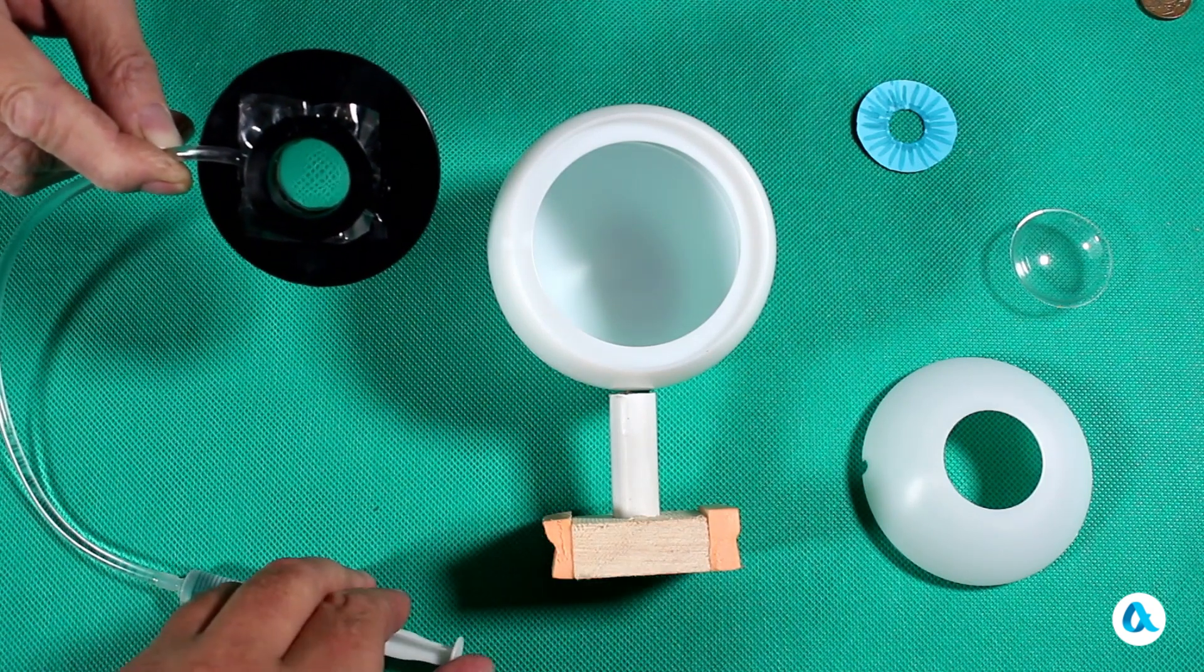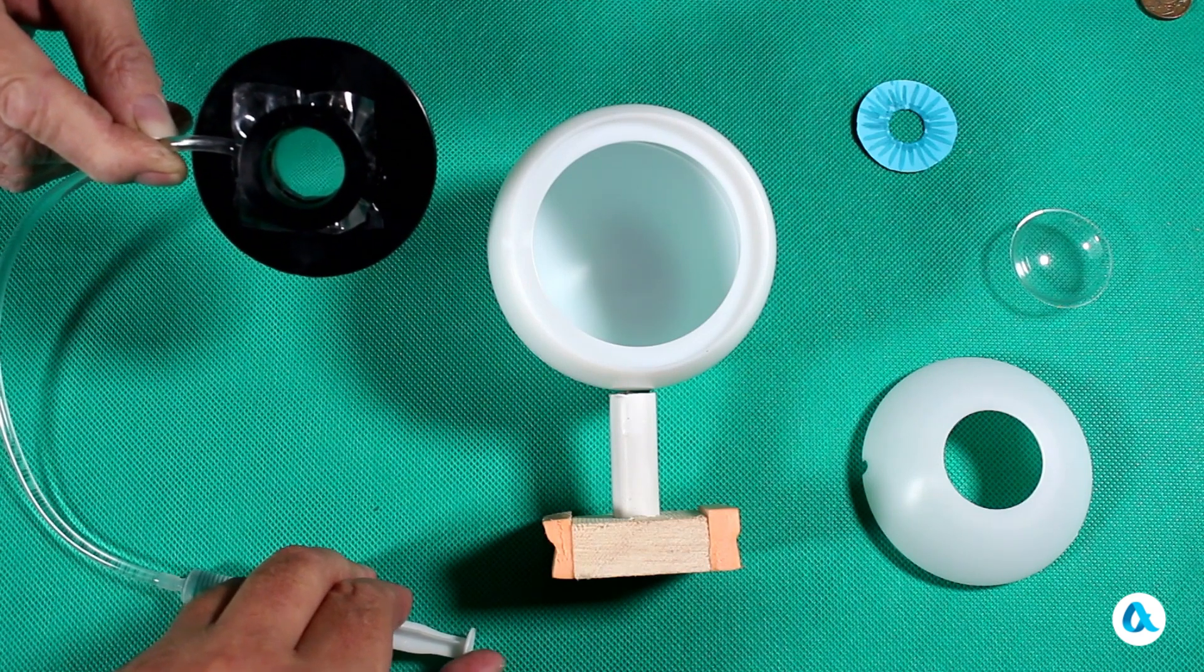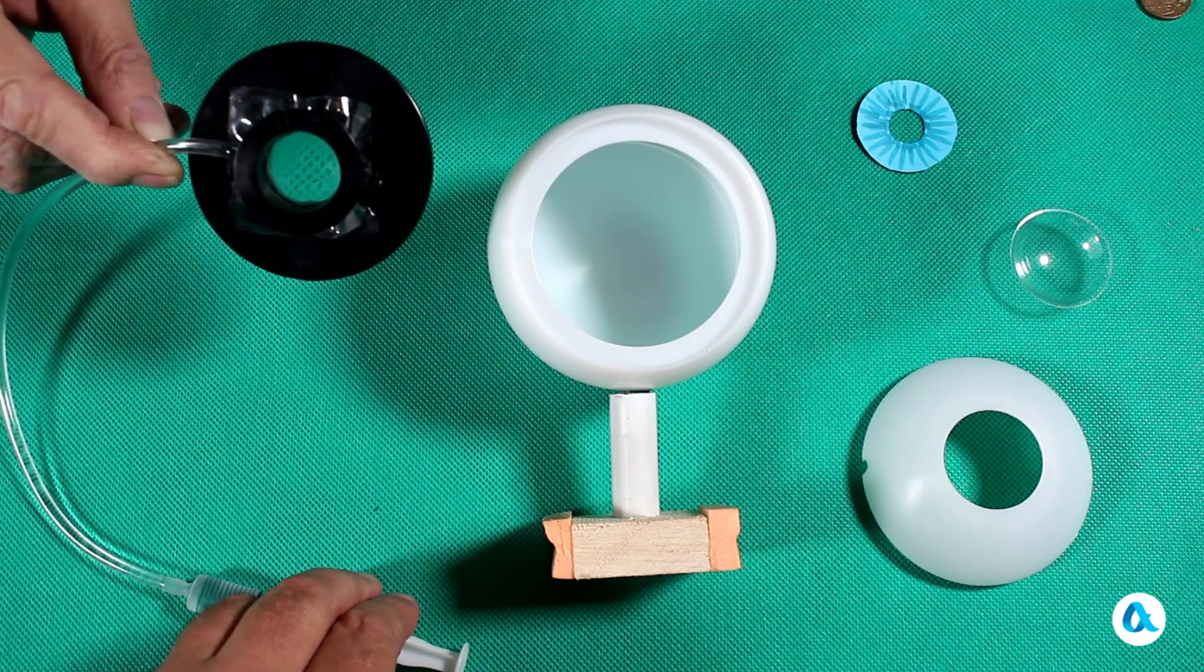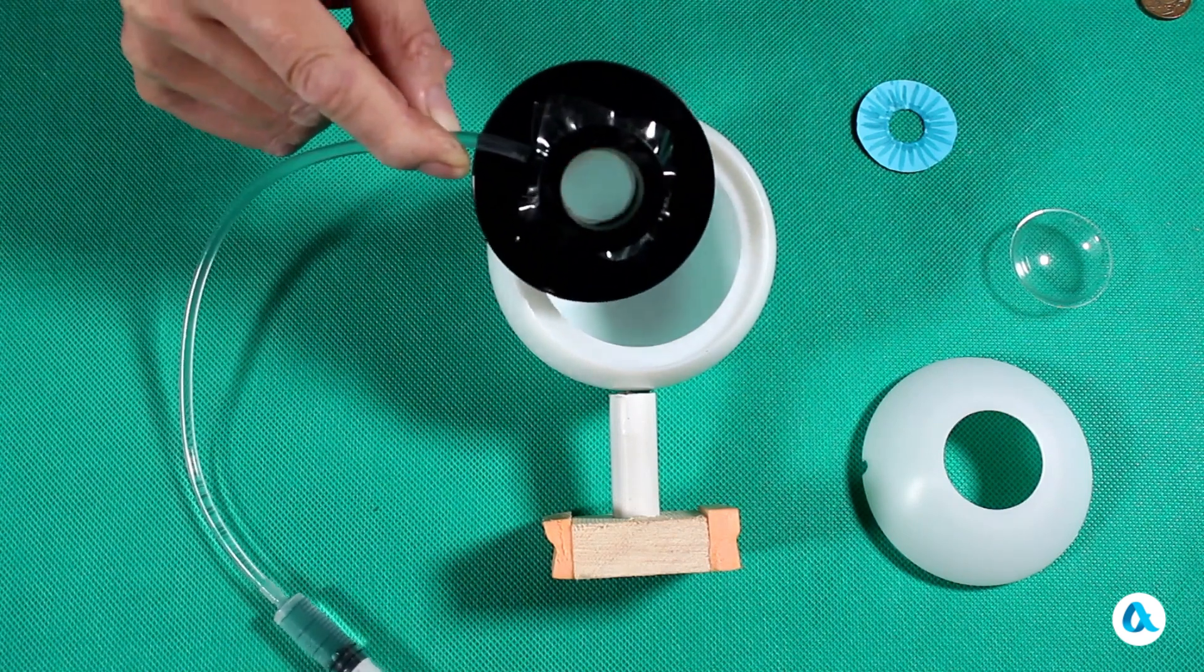And by changing the water pressure using a syringe, you can change the focal length of the lens, focusing on either close or distant objects. Now let's proceed to assembling our model.